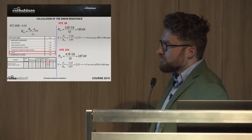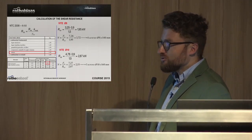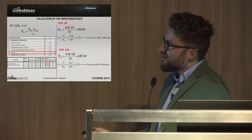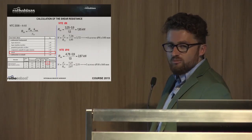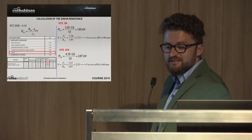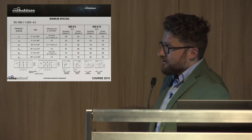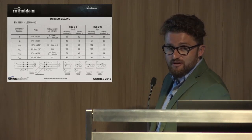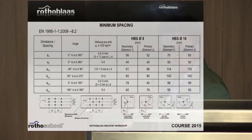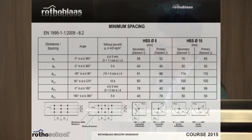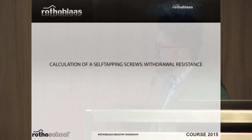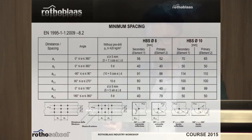Just to make clear — obtaining this characteristic resistance value means going through quite annoying formulas each time. It comes from the Johansson theory. It is not over because after determining the resistance values, we must ensure the installation is made properly — paying attention to all the minimum distances. This was the approach to calculating shear resistance.